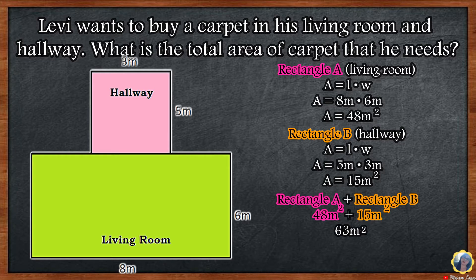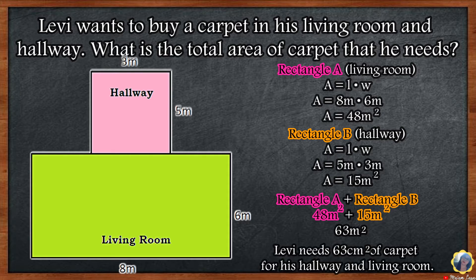Step 3: To get the total area of the floor, add the area of Rectangle A, the living room, and Rectangle B, the hallway. 48 square meters plus 15 square meters is equal to 63 square meters. Levy needs 63 square meters of carpet for his hallway and living room.